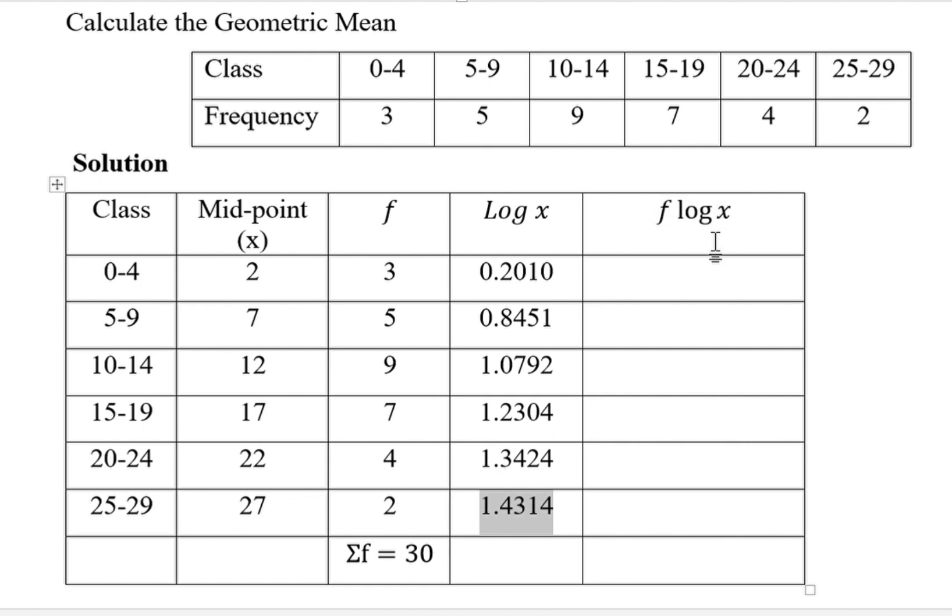Then the last column here is f log x, meaning we shall multiply values in column f times the corresponding values in log x column. In other words, we shall take values from this column times the corresponding values in this column. So the first one is 3 times 0.2010, giving us that. 5 times 0.8451, giving us that. 9 times 1.0792, giving us that.